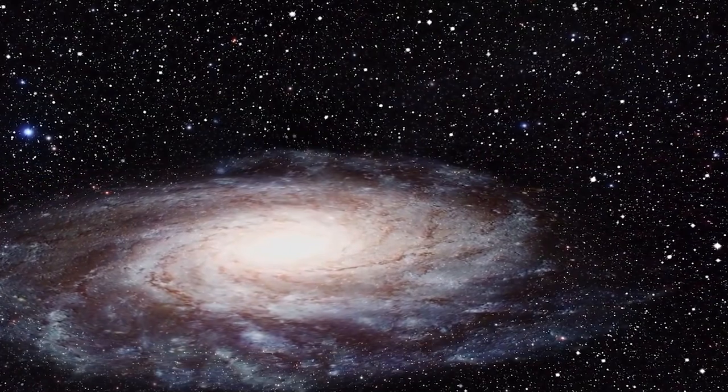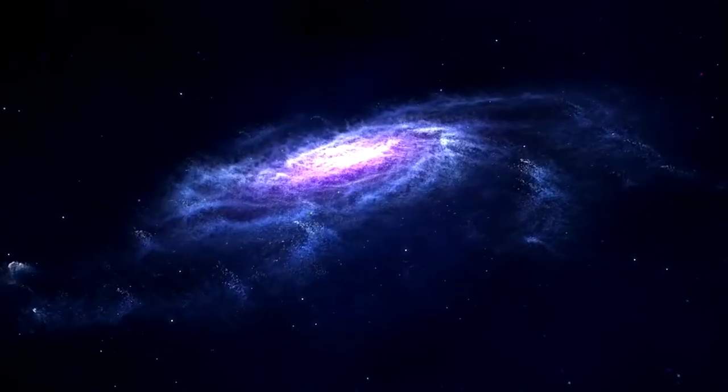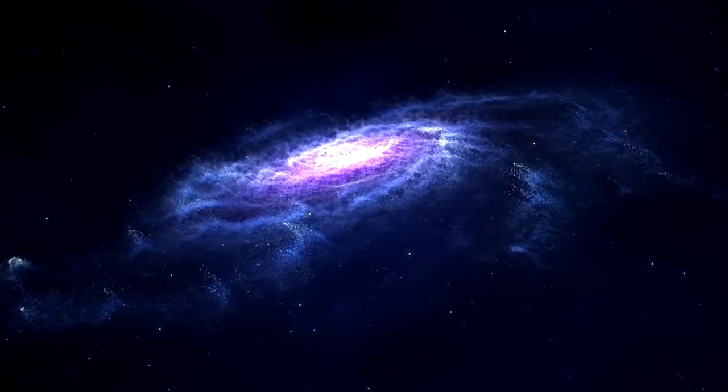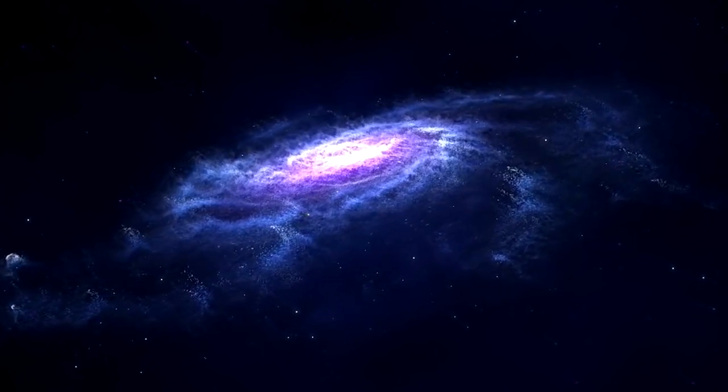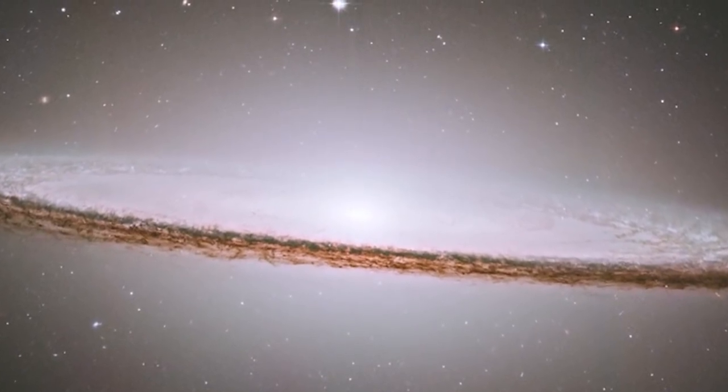The galaxy's distinctive feature, the dark band, is actually a region of obscuring dust in the galaxy's disk. This dust lane is believed to be the result of a past interaction or merger with a smaller companion galaxy, which caused the disruption of the Black Eye galaxy's structure.